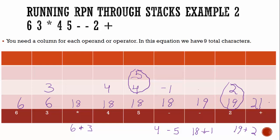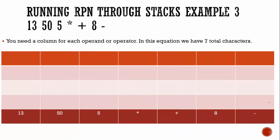So we're going to move on to example number three. Here, I strongly suggest you pause the video. Our characters are 13, 55 asterisk plus eight minus, and we have that written here. You can go ahead and pause the video and give it a try.